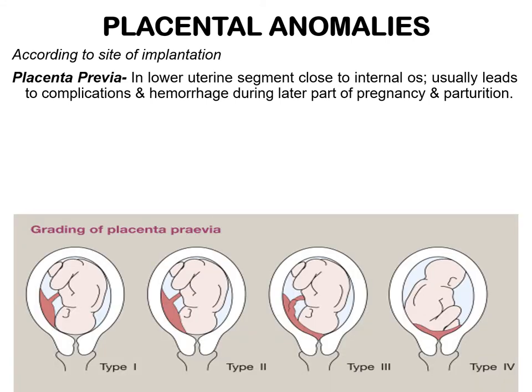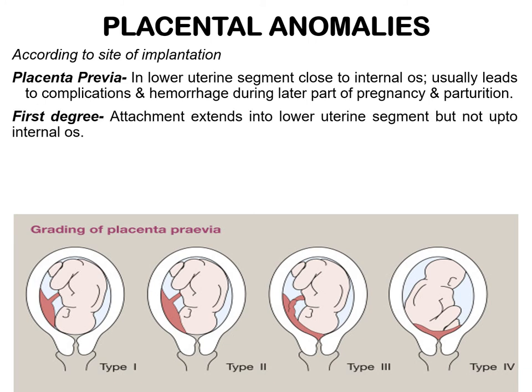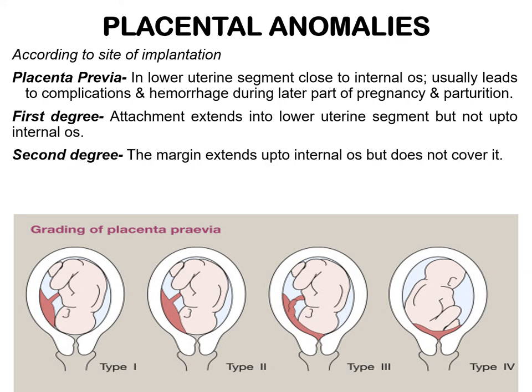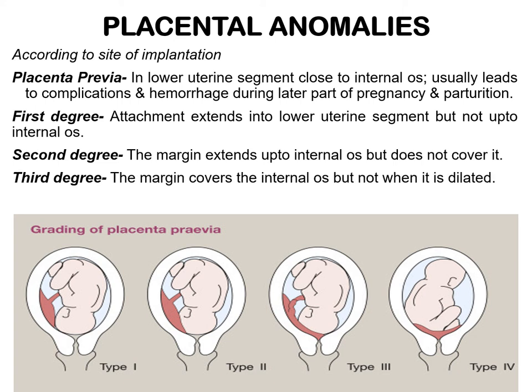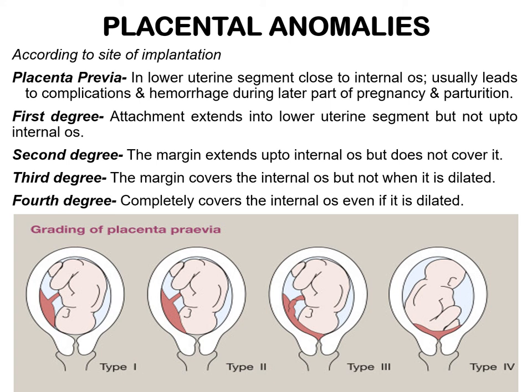The degrees of placenta previa are: 1st degree, when the attachment extends into the lower uterine segment but not up to the internal os; 2nd degree, when the margin of the placenta extends up to the internal os but does not cover it; 3rd degree, when the margin covers the internal os but not when it is dilated; and 4th degree, when the placenta completely covers the internal os even when it is dilated.